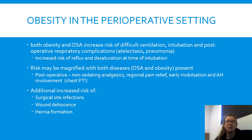Obesity in the perioperative setting comes with an increased risk of difficult ventilation, intubation, and postoperative respiratory complications such as atelectasis and pneumonia. Having obstructive sleep apnoea also carries these same risks, and these risks may be magnified when both obstructive sleep apnoea and obesity are present. There's also an increased risk of reflux and desaturation at the time of intubation. Postoperatively, risks can be decreased with the use of non-sedating analgesics such as paracetamol, ibuprofen, and regional pain relief or local anaesthetic blocks. For obese patients, there is also an additional increased risk of surgical site infections or wound dehiscence, and the increased intra-abdominal pressure increases the risk of hernia formation at the operation site.